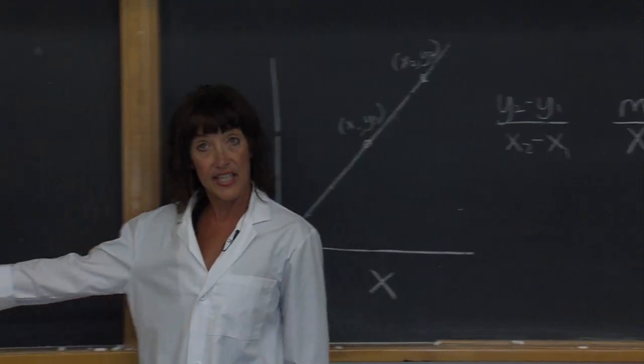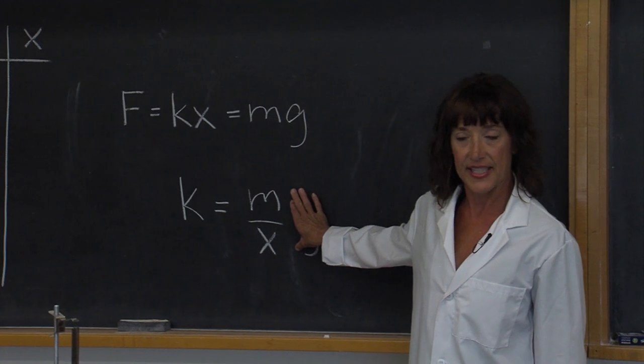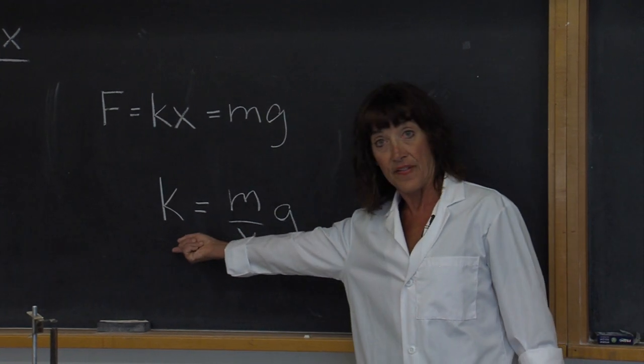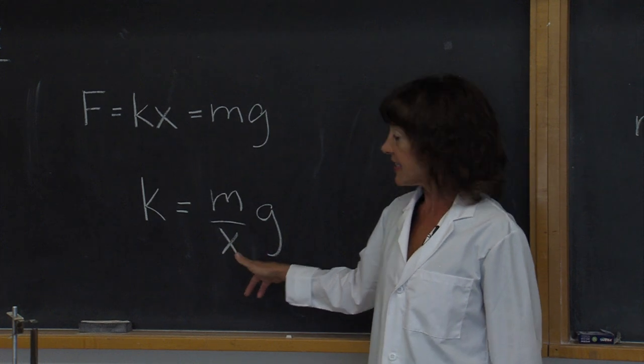Now I come back to this equation and you see that we have the value of m over x here. So the value for k for this spring is equal to the slope times g.